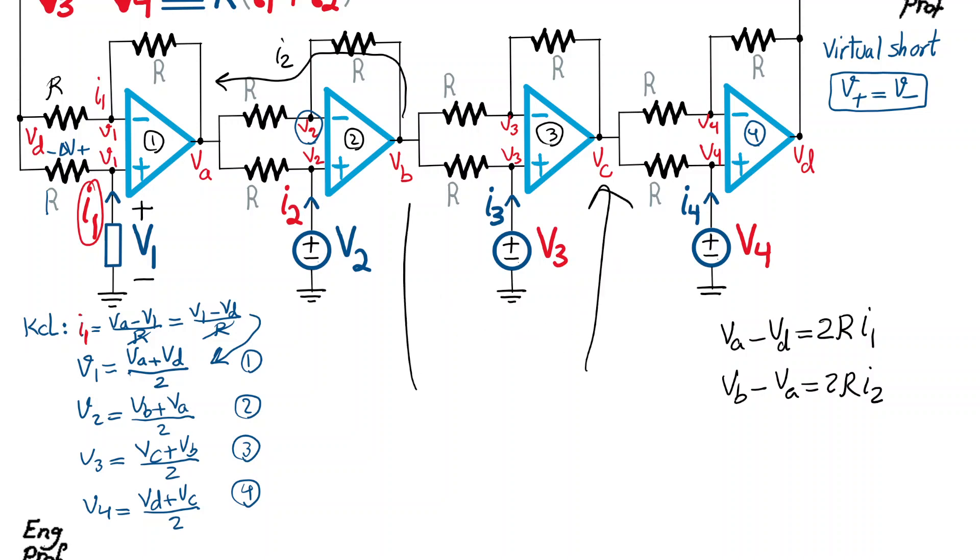I can do the same thing for stage three, I can say VC minus VB should be equal to R plus R times I3. So as a result, I can write VC minus VB is two R times I3. And then for stage four, I can do the same thing, I can say VD minus VC should be equal to R plus R, two R times I4. So I can say VD minus VC is two R times I4. So let's name these equations as equations 5, 6, 7, and 8.